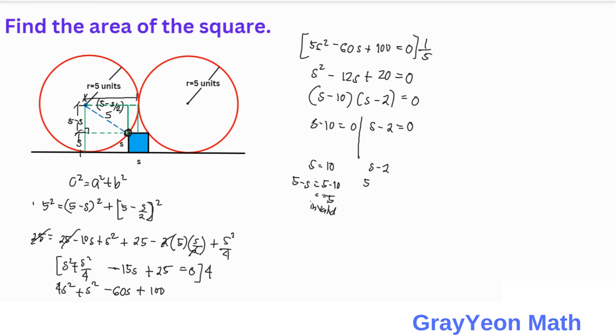So we have S equals 2, and 5 minus S equals 5 minus 2, which is 3. And 5 minus S over 2 equals 5 minus 2 over 2, which is 3 over 2. So we got S.